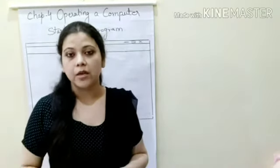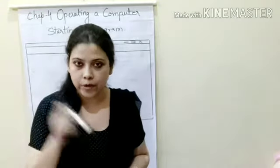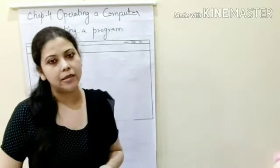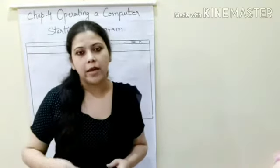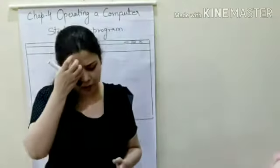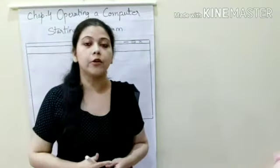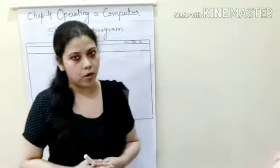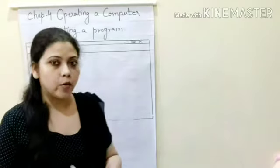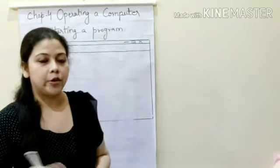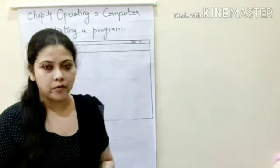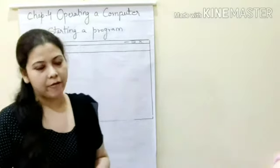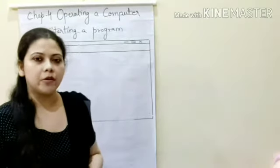The first step was to switch on the main power supply button. Then you have to switch on the UPS. What does UPS do? UPS makes the computer work if the electricity goes off. If the electricity goes off suddenly, the UPS will make the computer work for some more time so that you can complete your important work and save your files. This is the function of UPS.